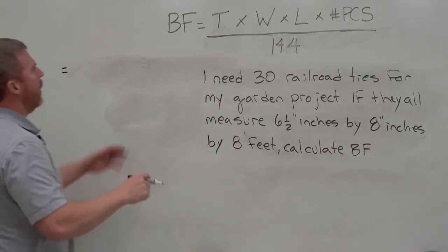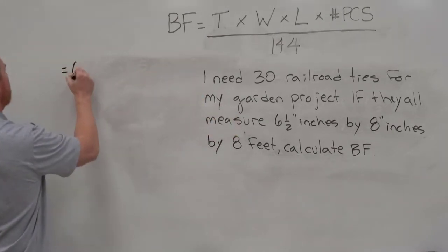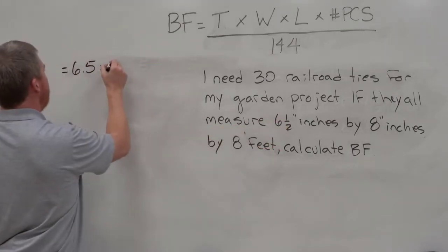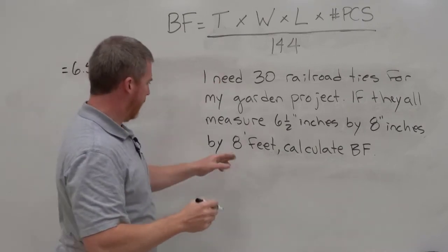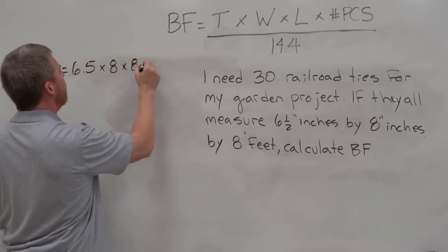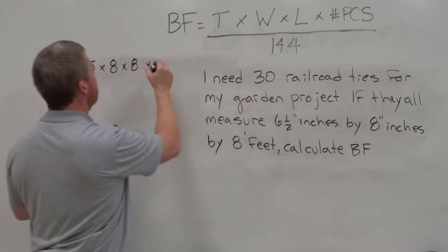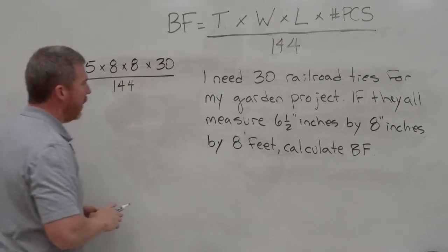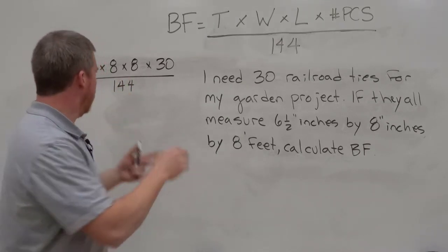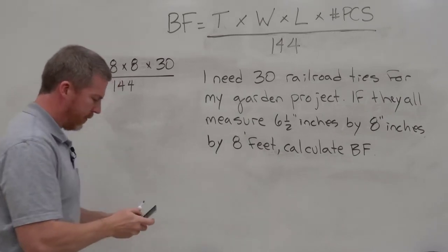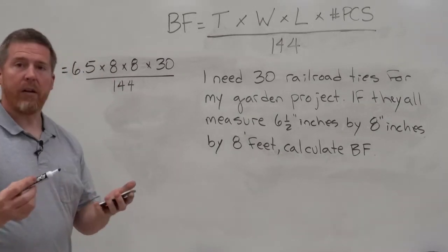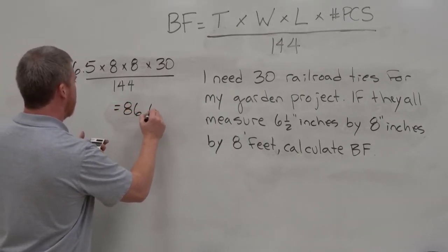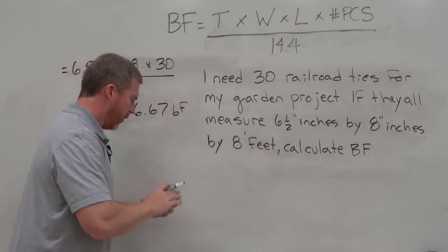So equals thickness. Let's say it's the first number, 6.5. Width, let's say it's the second number by eight. My length, let's say it's the third number, eight. And the number of pieces is right in the beginning is 30. I'm going to divide that by 144. So that was pretty simple. We have our four numbers. We plug them in and let's go ahead and figure this out. My calculator is coming up with 86.67 board feet.